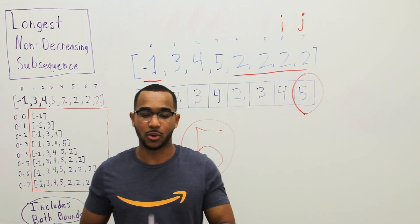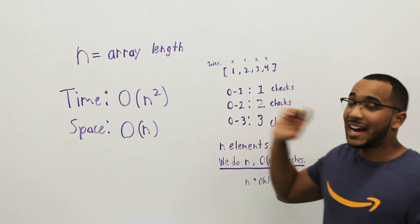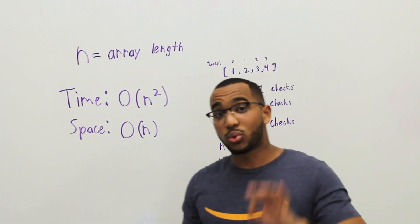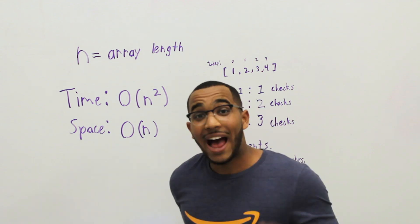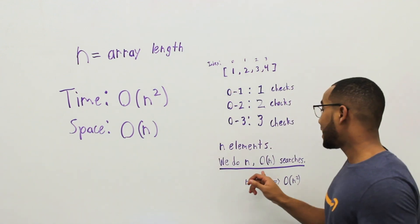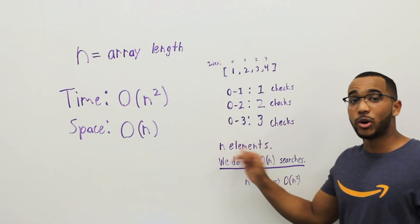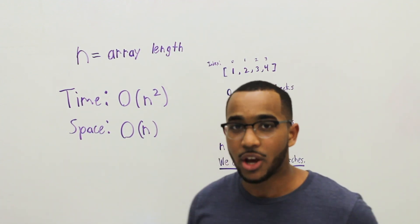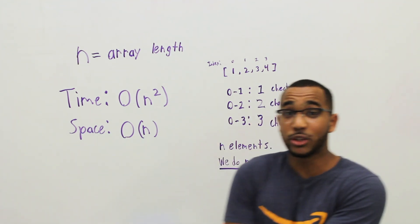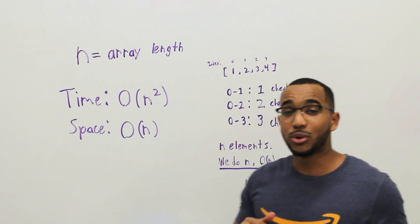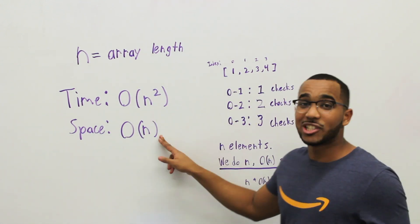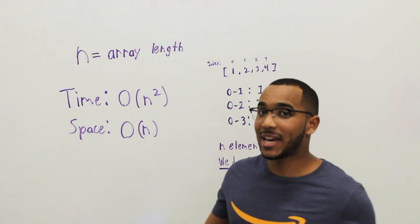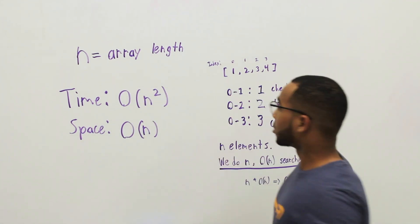Now let's look at the time and space complexities for this solution. The time complexity is O(n²). Why? We have N elements, and for each of the N elements we solve the longest non-decreasing subsequence problem, which takes O(N) work. So that becomes N times N, giving us O(n²). This is not mathematically rigorous — you can bound it tighter — but the general bound is O(n²). The space complexity is O(N) because we store the answer to N subproblems, so space scales linearly with the input.